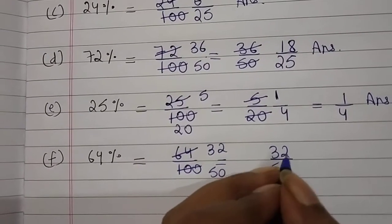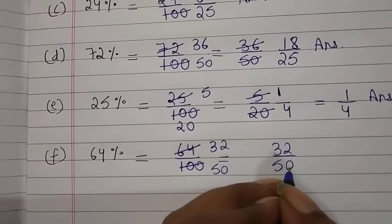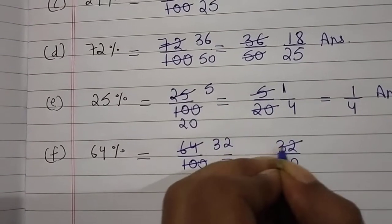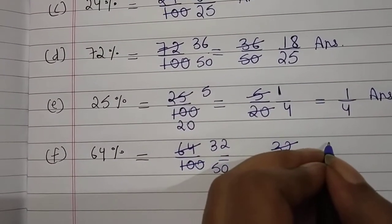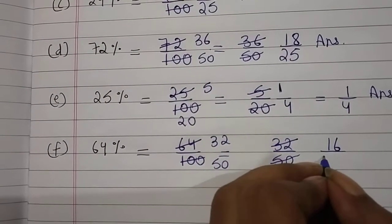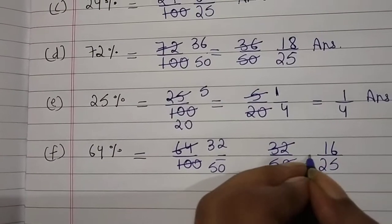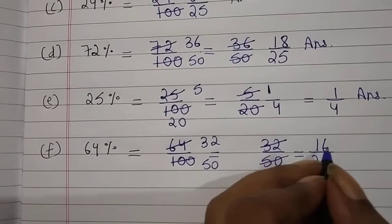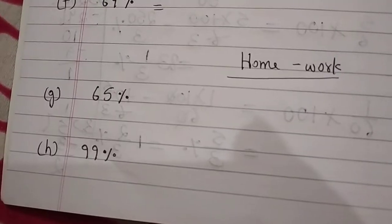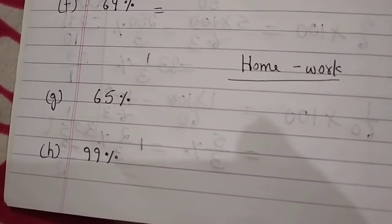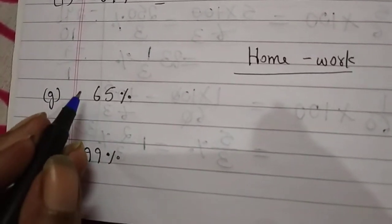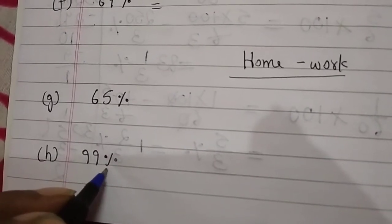Again हम लोग 32 and 50 को divide करेंगे 2 से. 32 को आप 2 से divide करोगे तो answer आएगा 16. 50 को आप 2 से divide करोगे तो answer आएगा 25. Now students, 16 upon 25 — this is your answer. Students, note down your homework: G and H part. This is your homework. You have to do it in your copy and show me tomorrow.